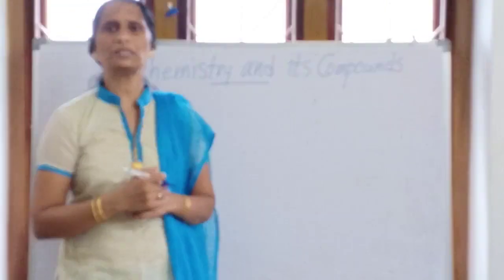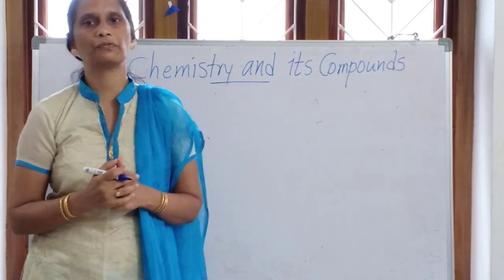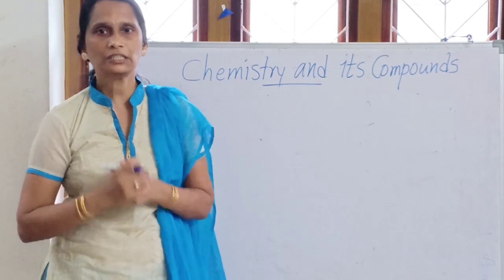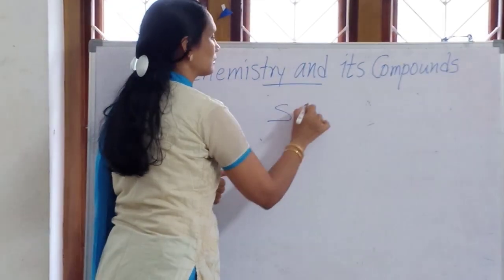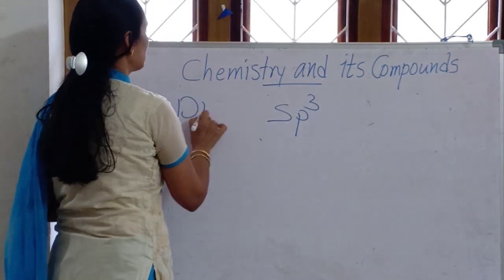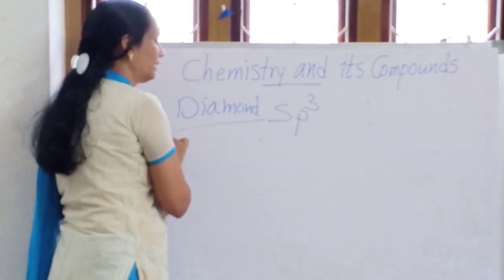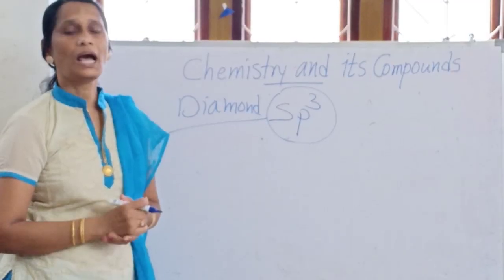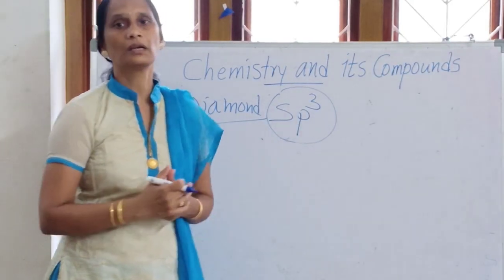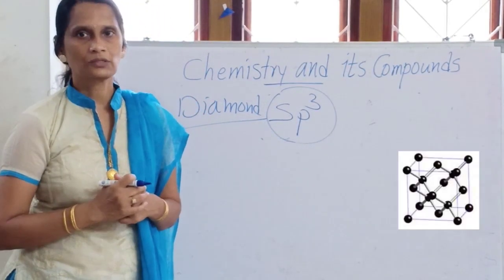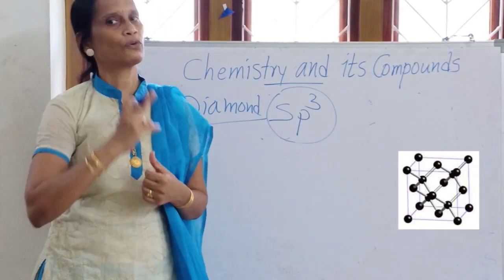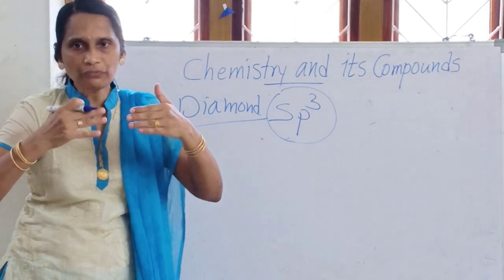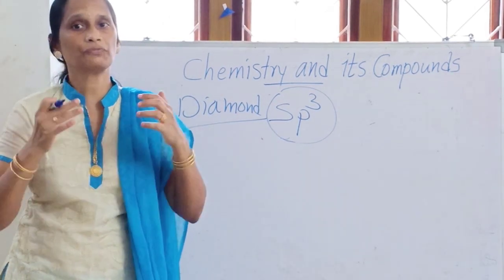Diamond is very strong — diamond can be broken only with the help of another diamond. This strength is due to the sp3 hybridization of each carbon in diamond. Each carbon atom undergoes sp3 hybridization, which gives a tetrahedral arrangement. This tetrahedral arrangement is the reason for the strength of the C-C bond, making diamond itself very strong.